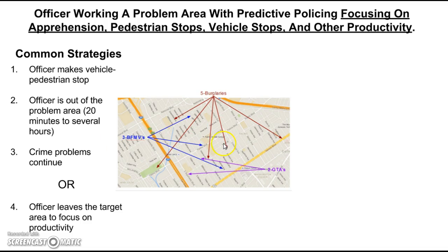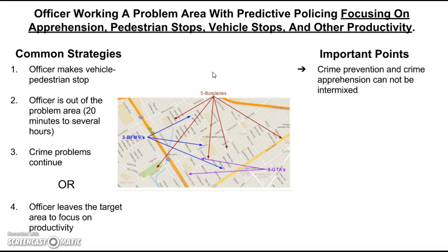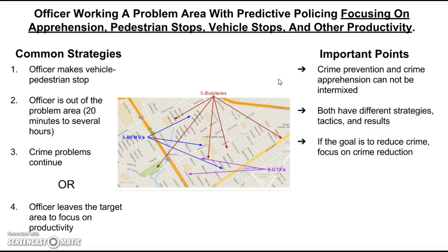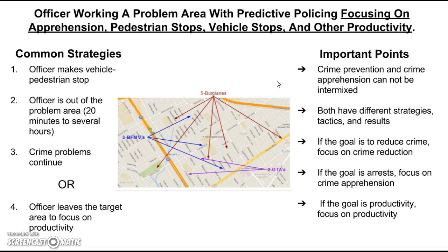Or eventually, if the officer cannot make the necessary stops, they leave the target area and focus on productivity elsewhere. A couple of things to remember when implementing a predictive policing program: you cannot intermix crime prevention and crime apprehension. Both phases have different strategies, different tactics, and very different results. If your goal is to reduce crime, focus on crime reduction. If your goal is to make arrests, focus on crime apprehension. You cannot mix the different phases, because once you do, you eventually take yourself out of the area — and once you're out of the area, you're not a player anymore. You cannot prevent crime or make arrests.